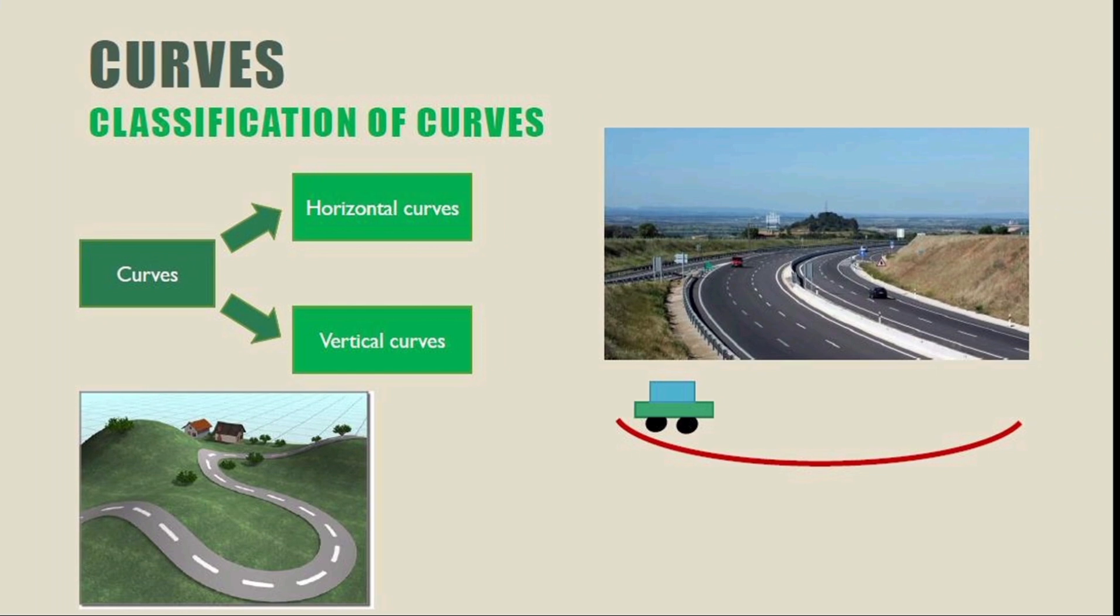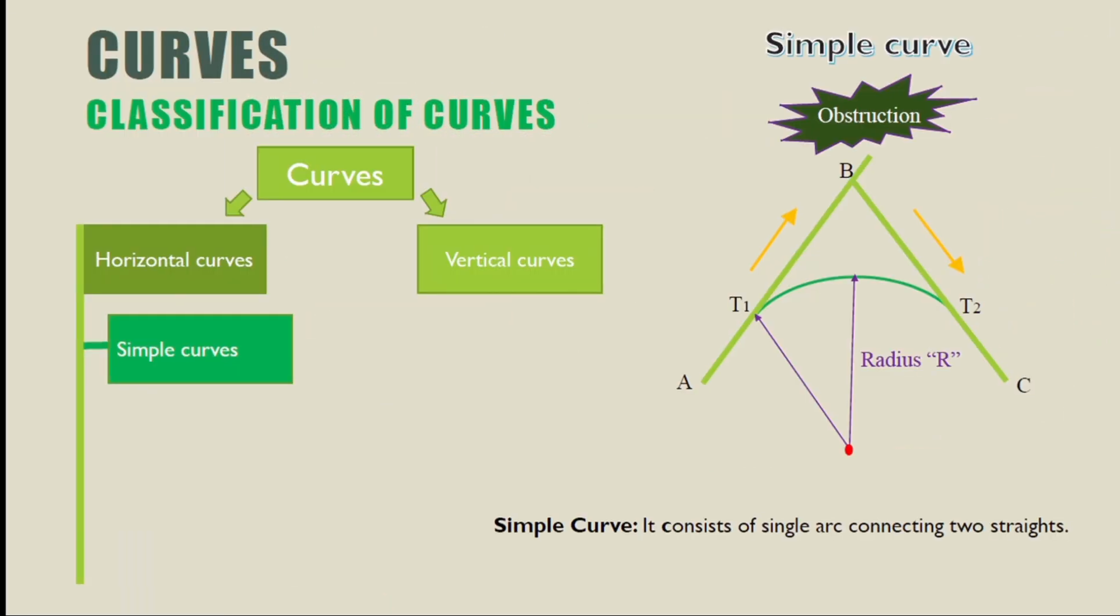and vertical curves. There are several types of horizontal curves. Simple curve consists of a circular arc connecting two straights.